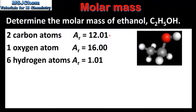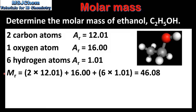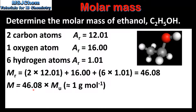On the left we can see the relative atomic masses of carbon, oxygen and hydrogen. First we'll calculate the relative molecular mass of ethanol, which is 2 times 12.01, plus 16, plus 6 times 1.01, giving a relative molecular mass of 46.08. Because this is the relative molecular mass it has no units. To convert to molar mass we multiply by the molar mass constant, giving a molar mass of 46.08 grams per mole.